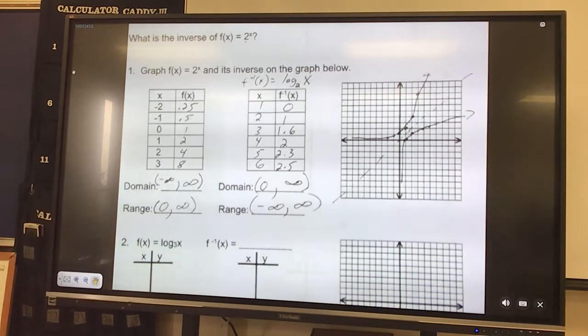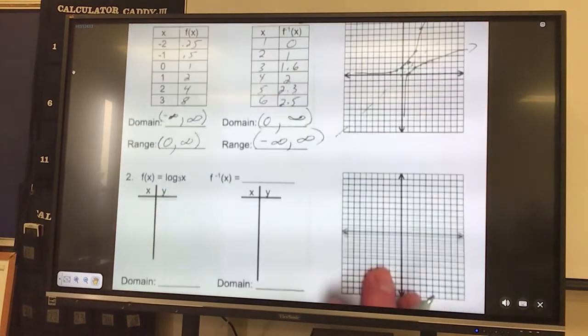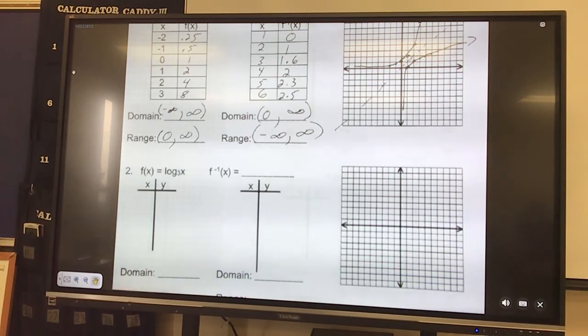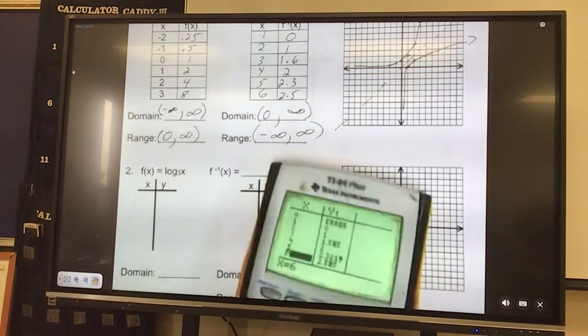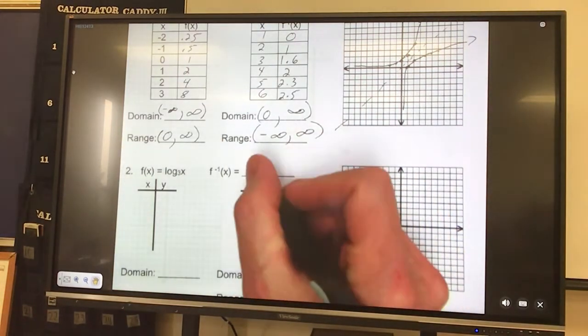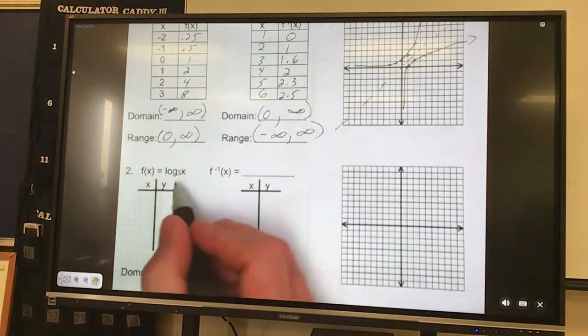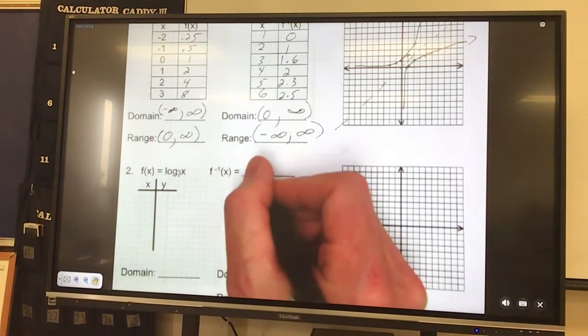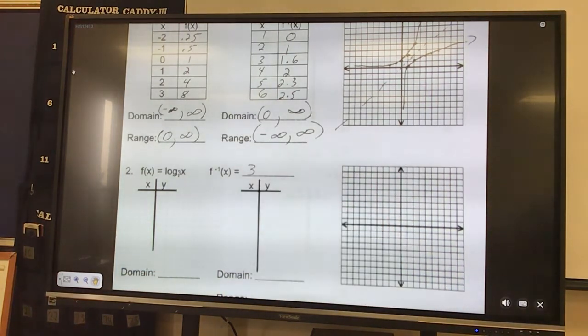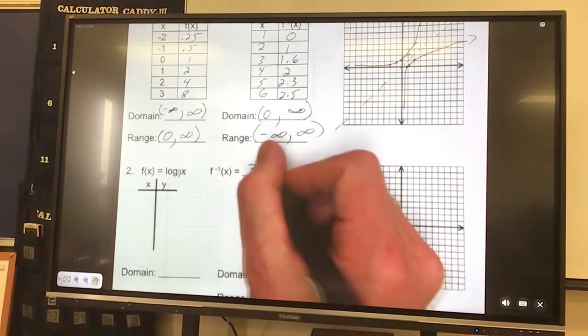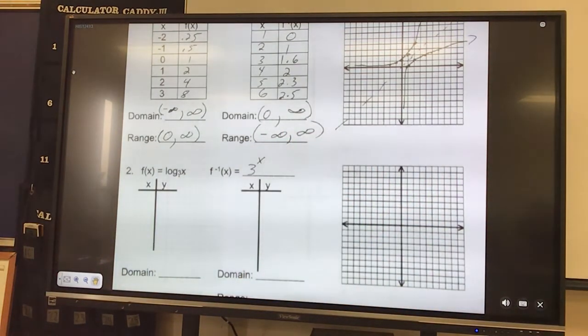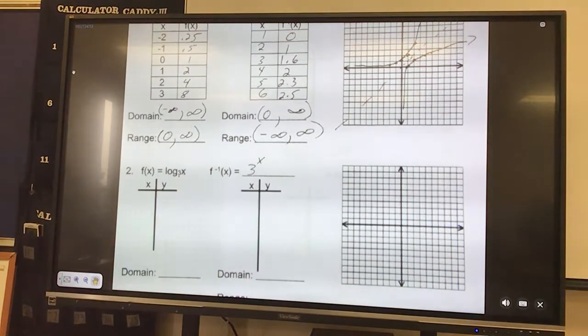Let's do log base 3x. So we're ready to plug it in and we're going to convert it to exponential. In fact let's do that first off. Exponential, that's my base, so it becomes the base of the exponent. So it'll be 3 raised to the x power. So those two are inverses of one another.